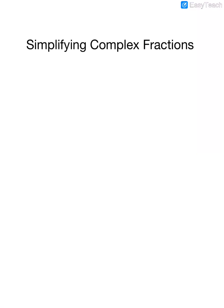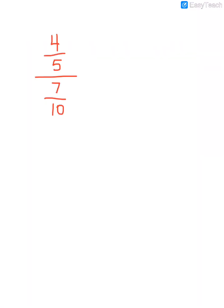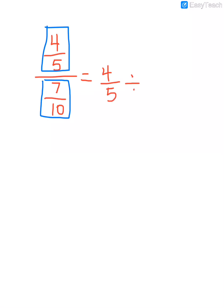This is what a complex fraction looks like. Here we have 4 fifths over 7 tenths. So we have a fraction in the numerator and a fraction in the denominator, but remember that the fraction bar is really just the same thing as a division bar. So we can also say that this fraction is being divided by this fraction — another way to write it would be to take the numerator and say that it's being divided by the denominator.